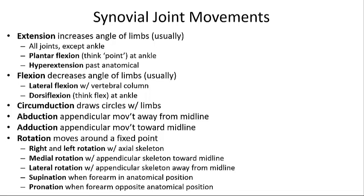In the anatomical position, the forearm is supinated with the radius and ulna parallel to each other and the palms facing anteriorly. A good memory aid: think of Oliver Twist walking up and asking for more soup — supination lifts his palms up to the sky. Pronation is when the shaft of the radius rotates so the distal epiphysis of the radius rolls across the anterior surface of the ulna, the bones cross, and the palms face posteriorly — like when you're dribbling a ball.